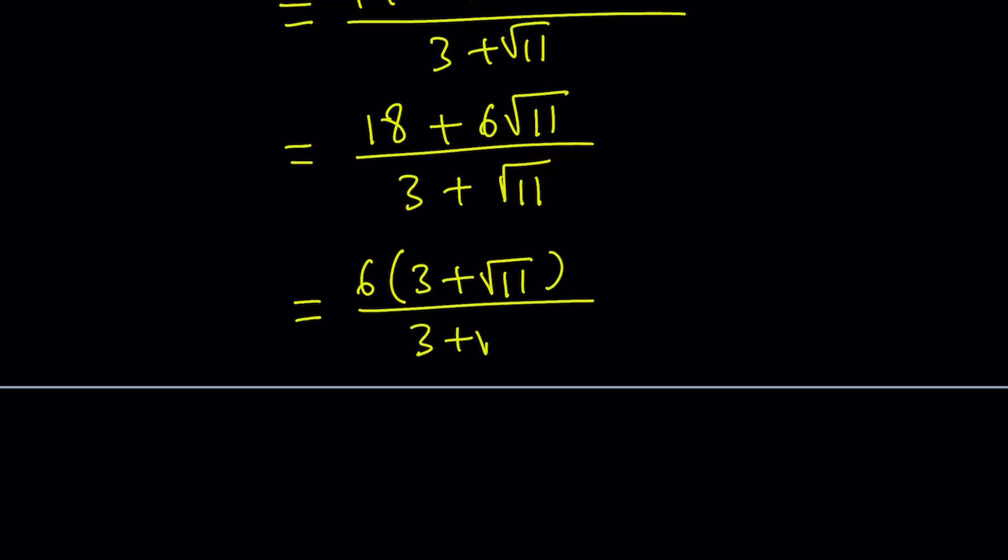It's what's at the bottom. So 3 plus root 11 obviously does not equal 0, because root 11 does not equal negative 3. So these two terms cancel out, leaving us with 6, which is the value of x minus 2 over x.